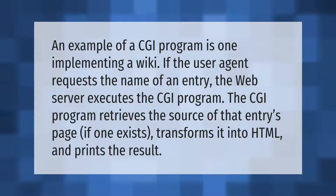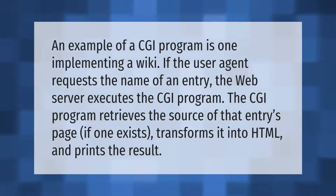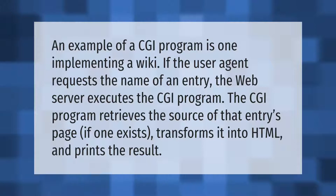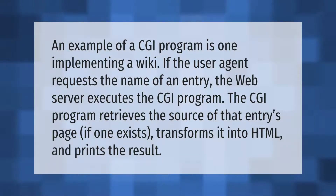An example of a CGI program is one implementing a wiki. If the user agent requests the name of an entry, the web server executes the CGI program. The CGI program retrieves the source of that entry's page, if one exists, transforms it into HTML, and prints the result.